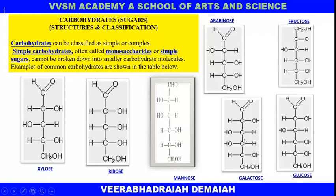Coming to the other structures: mannose also has an aldehyde group and is a pentose with five carbon atoms. Ribose is also a pentose with five carbon atoms. Xylose likewise has five carbon atoms and is a pentose. So pentoses and hexoses are the important simple sugars in the classification of carbohydrates.